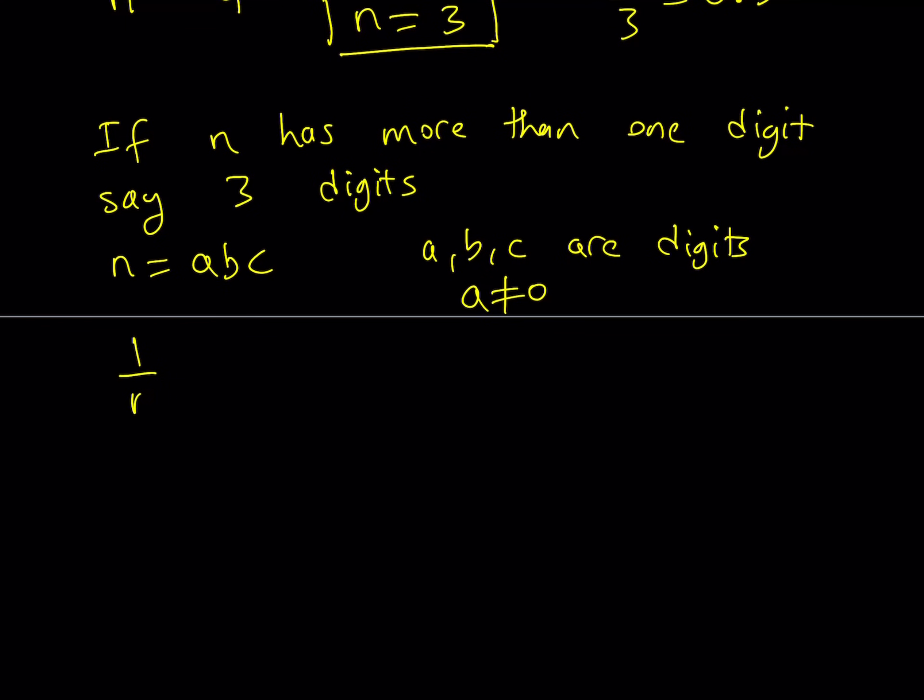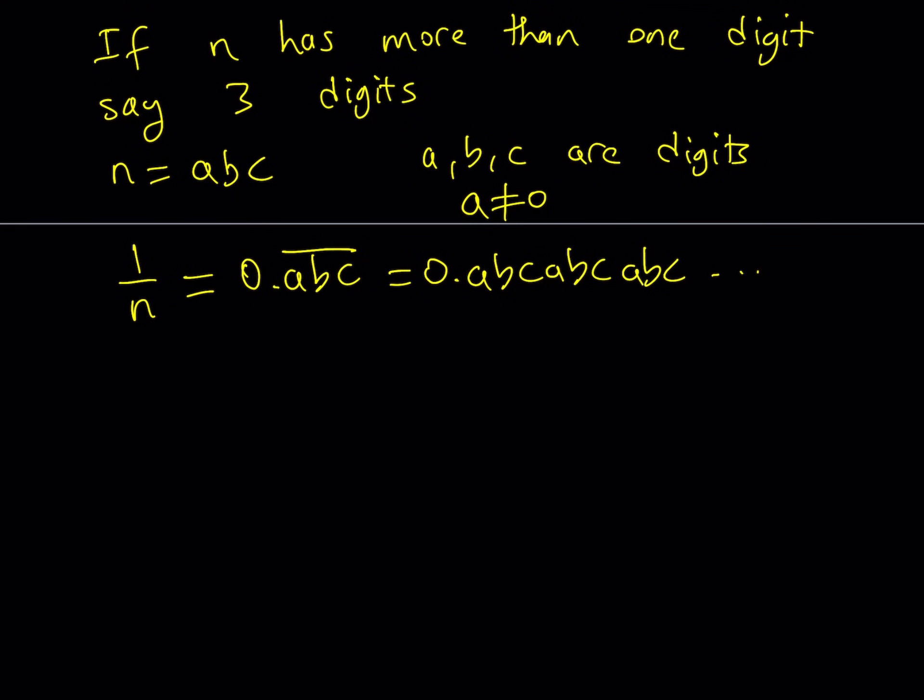So now we can write 1 over n as 0.n repeating. So it's going to be like this. And this can be written as you know 0.abc, abc, abc, abc, so on and so forth.